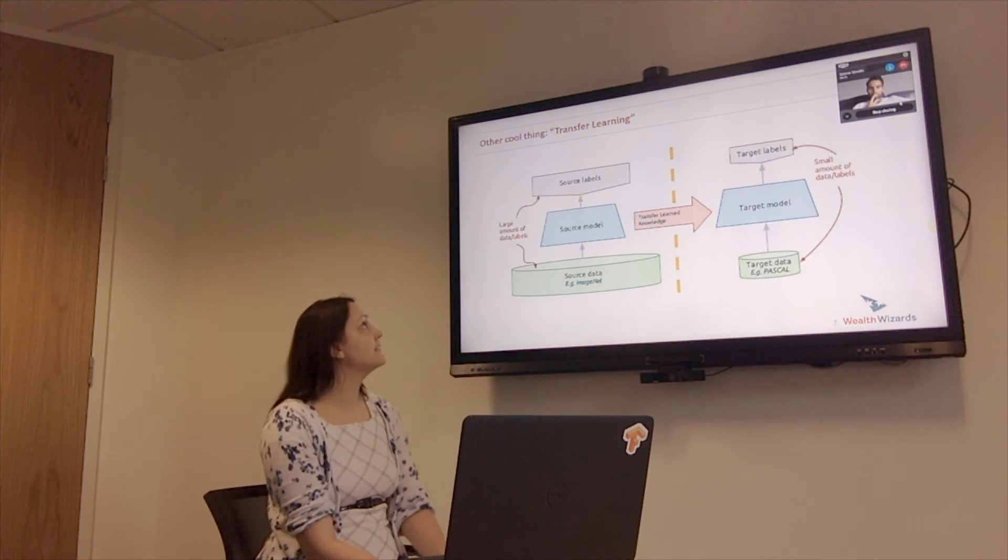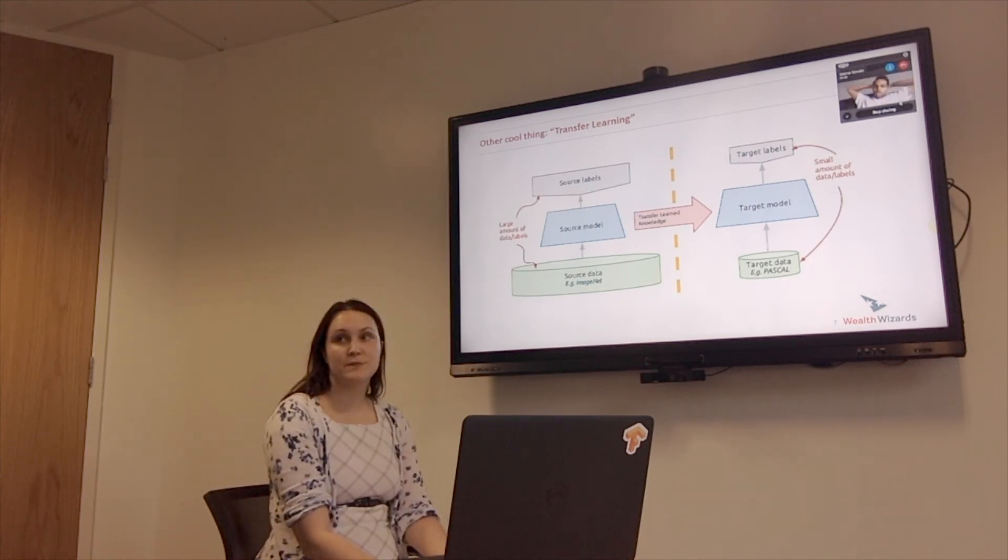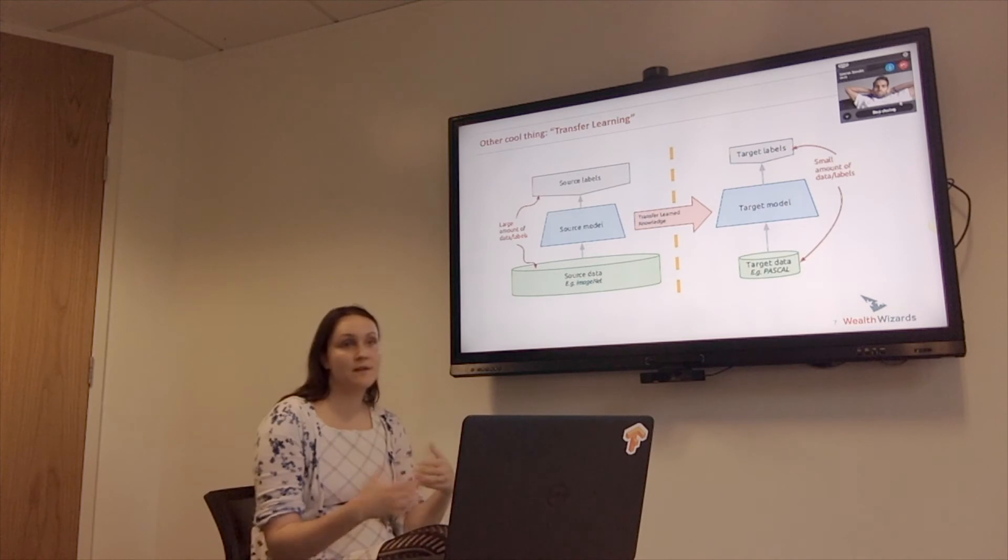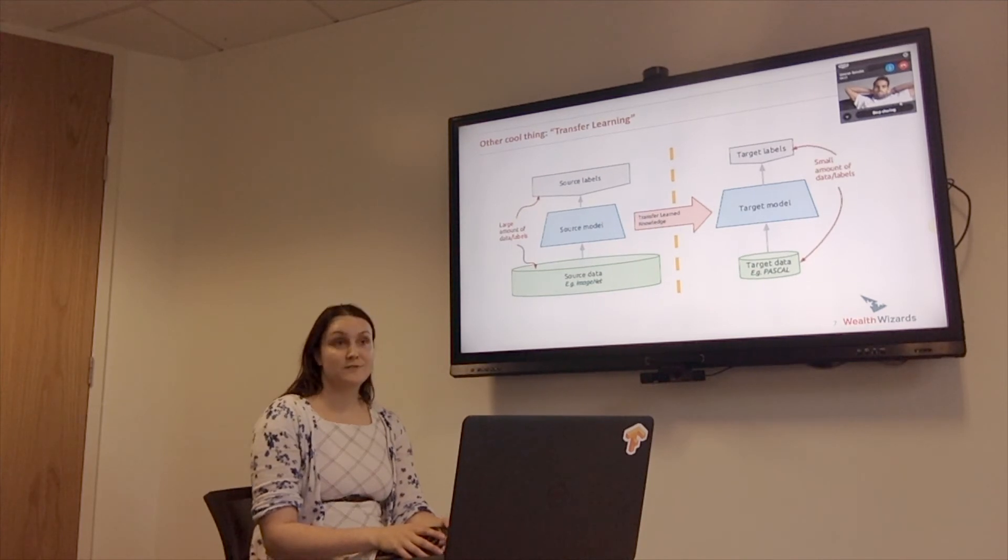So that was the main cool thing. The other cool thing is that Monzo had a similar problem to us in that they don't have enough data because obviously this help thing wasn't live in their app. They had no data to train it on. So what they did instead, they used something called transfer learning.